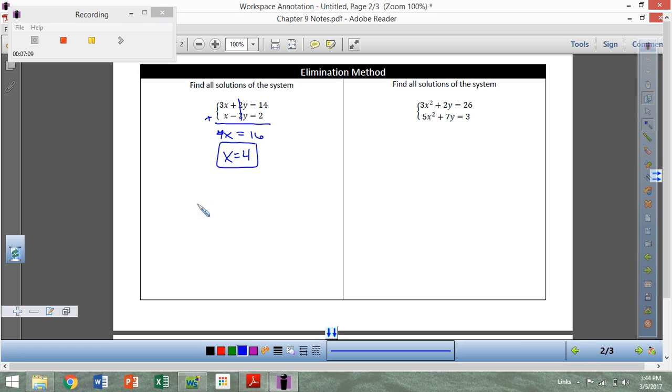And then I want to plug that back in and solve. So I'm going to use the bottom equation, and I would say that if x equals 4, then this term will just be 4 minus 2y equals 2. So you subtract the 4, negative 2y equals negative 2, so y equals 1, and so my solution would be the point 4, 1. Again, these are just two lines. They cross at the point 4, 1.